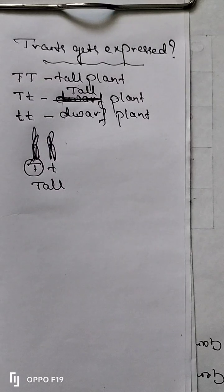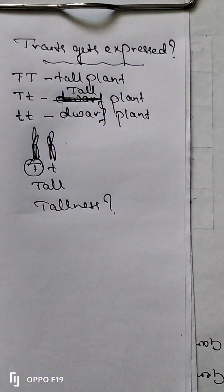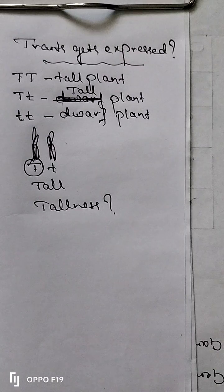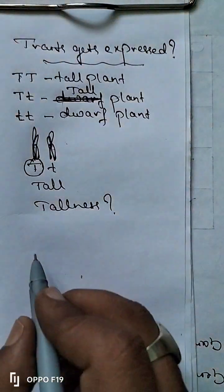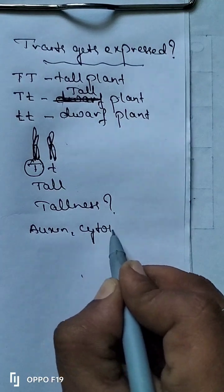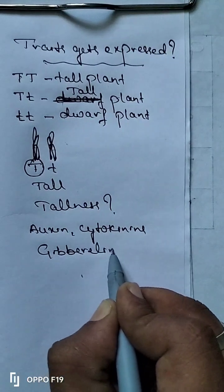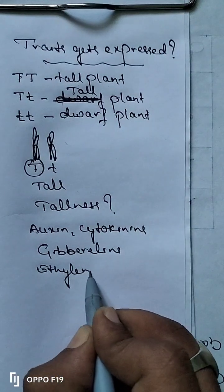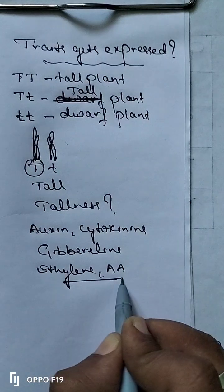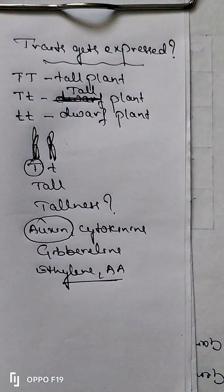Therefore, the plant will grow as a tall plant. Then, who is responsible for tallness? We should recall what we studied in control and coordination. In control and coordination, we studied plant hormones. There are five plant hormones: auxin, cytokinins, and gibberellins — these are the three growth-promoting hormones. Then ethylene and abscisic acid — these two are called growth-inhibiting hormones.